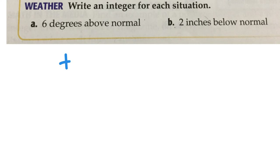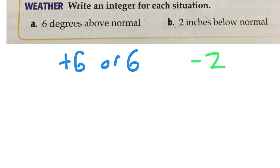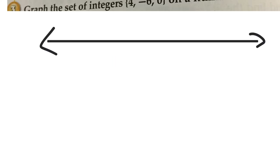Positive 6 — you could write plus 6 or just 6. For 2 inches below normal, that would be negative 2. Yes, because we are looking at below normal.